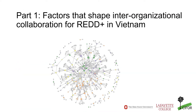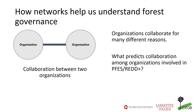The core question that I'll focus on in this part of the presentation is what shapes collaboration between organizations that are involved in REDD+ in Vietnam. The context for this work is the ongoing project identifying conditions for successful landscape-scale conservation policy implementation in Vietnam, and forest governance involves lots of interactions among many different types of organizations.